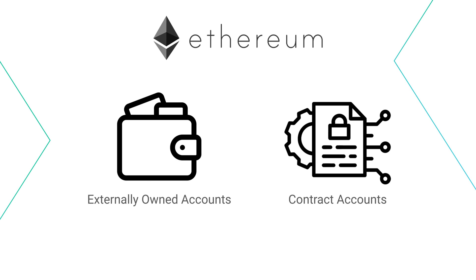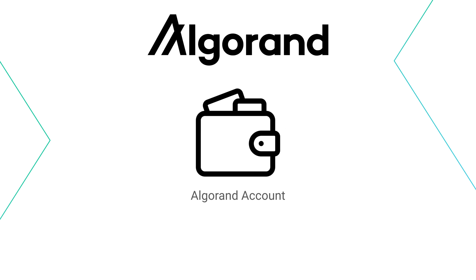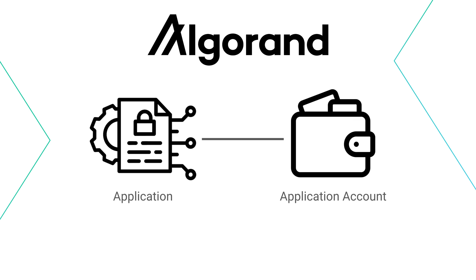So to summarize: Ethereum has two different types of accounts, EOA and contract accounts, whereas on Algorand there's only one type of account called an Algorand account. Every smart contract has an associated Algorand account that can send transactions, allowing the smart contract to send and receive assets and algos.